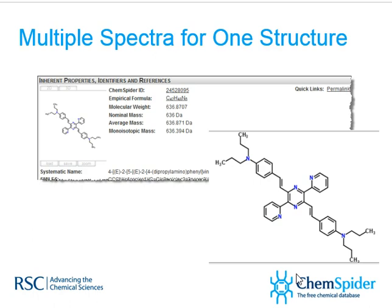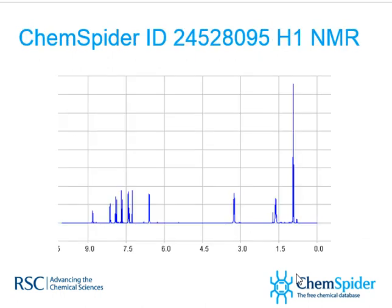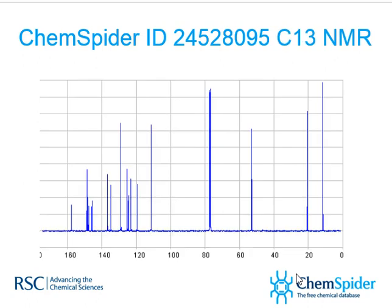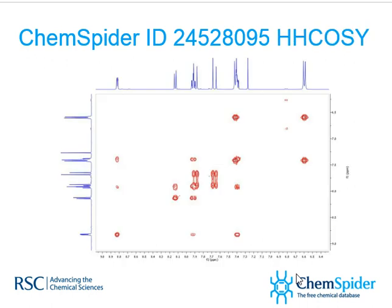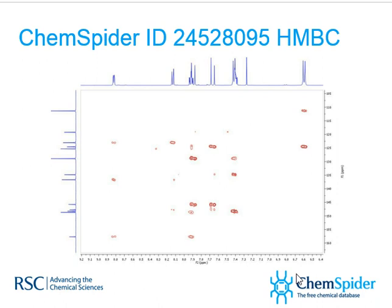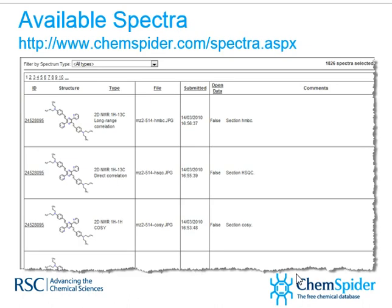For this particular structure, the scientist actually acquired a pile of relevant data and deposited it. This is from a gentleman in Germany who used to run an NMR spectroscopy lab. He's put on the proton spectrum, carbon spectrum — these are fully zoomable and you can interact with the data. He also deposited images: the COSY, the HSQC, and the HMBC. So it's a very rich data set for people to work with, certainly for students to practice and get trained. To see all available spectra, you just go to chemspider.com and look at spectra.aspx.